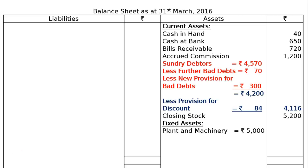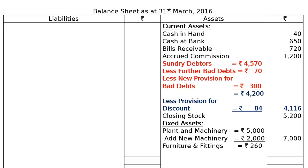Under fixed assets: plant and machinery Rs. 5,000, add new machinery included in purchases Rs. 2,000, giving Rs. 7,000 in the final column. Here there is no depreciation on machinery, so we treat it as Rs. 7,000. Furniture and fittings Rs. 260, less depreciation at 5%, that is Rs. 13; final column Rs. 247.